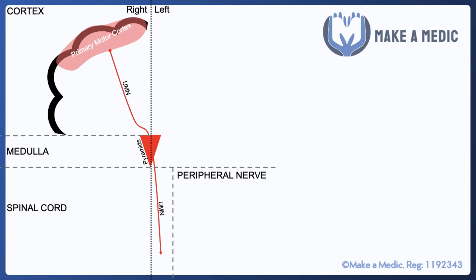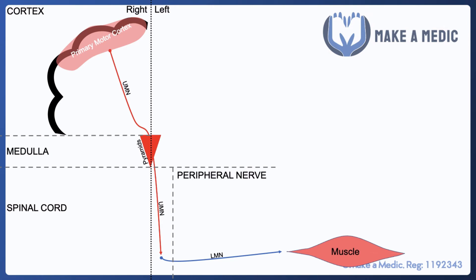The pathway will cross the midline at the medulla and travel down the corticospinal tract in the spinal cord. It will eventually synapse with the lower motor neuron within the anterior horn at the level at which the lower motor neuron exits the spinal cord. The lower motor neuron will then go and innervate a skeletal muscle.